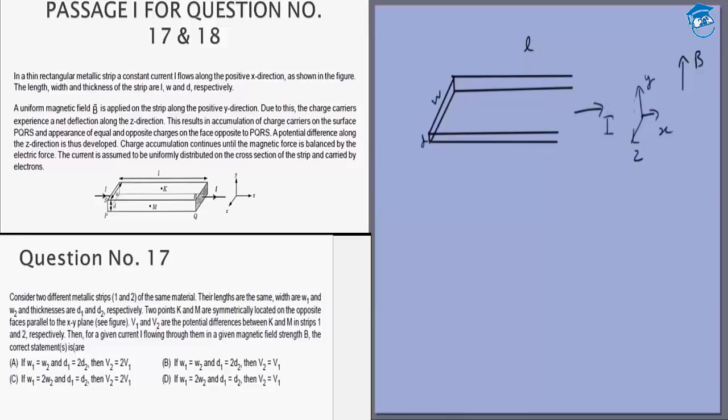I is along this direction, so I cross B, or you can think of it as Q into V cross B, will be towards the z direction. On every positive particle, that is proton, there will be a force in this direction and they will be pushed in this direction. So we need to find out the Hall potential difference between these two.